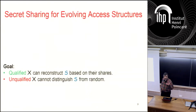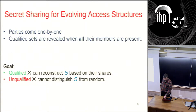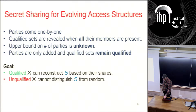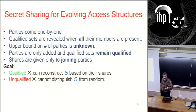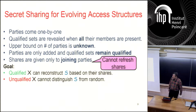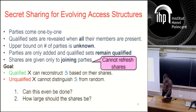Back to our evolving scheme: parties arrive one by one, qualified sets are revealed when all members are present, an upper bound on the number of parties is unknown, parties are only added, and qualified sets remain qualified. The shares are given only to the joining parties — you cannot refresh the shares of old parties. If Adam has a share and then Kobi shows up, I can't call Adam and say 'here is your new share.' Once Adam has a share, that's it.